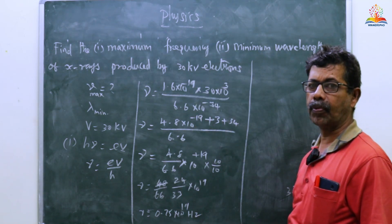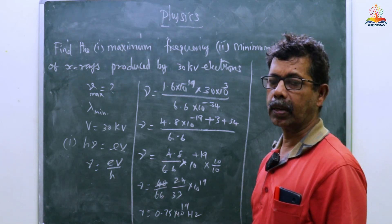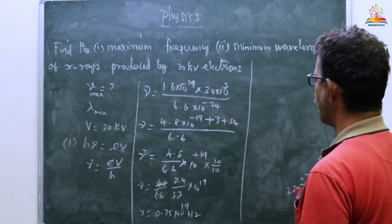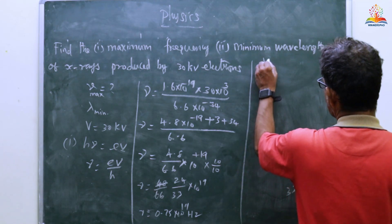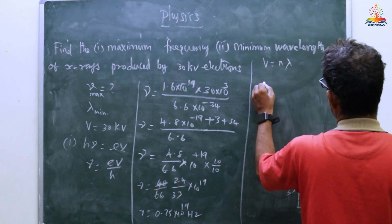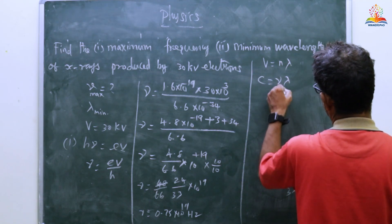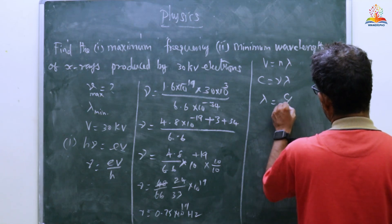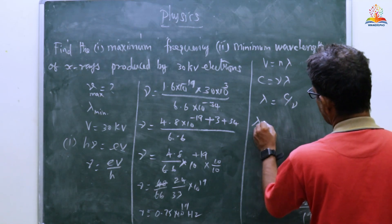Then maximum frequency is done. The minimum wavelength is next. C equals νλ, then λ equals C by ν.